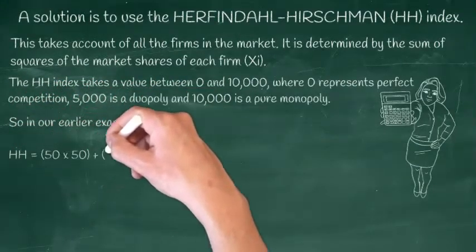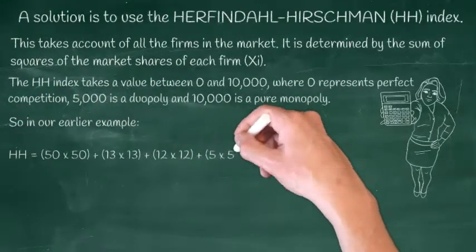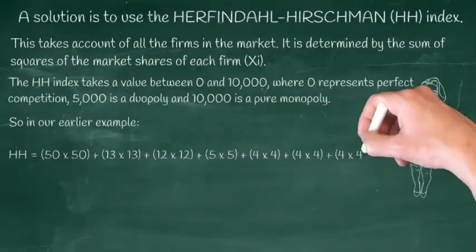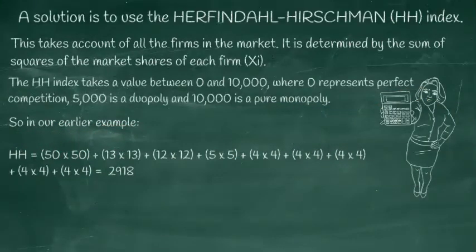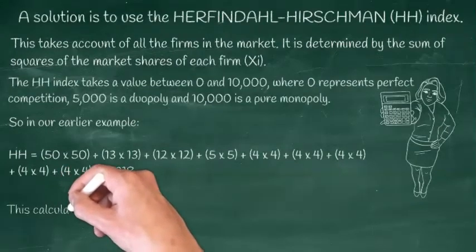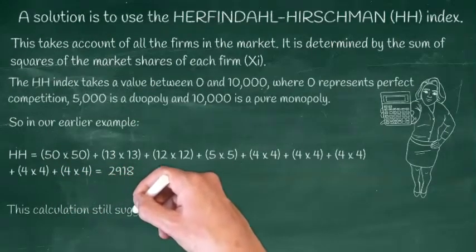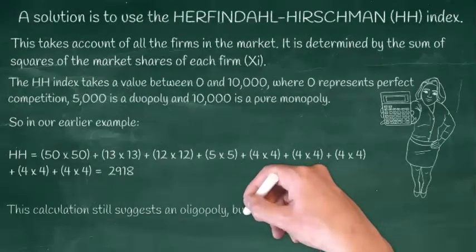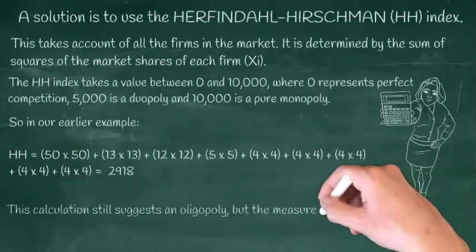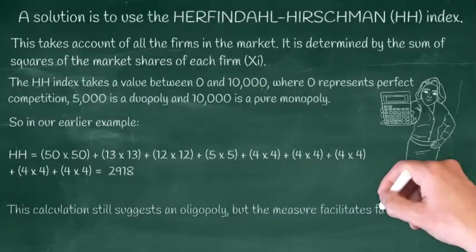You will need your calculators to work these out. From our earlier data, we can calculate a Herfindahl index of 2,918. Again, this would imply an oligopolistic market structure, but perhaps one closer to a duopoly than say monopolistic competition.